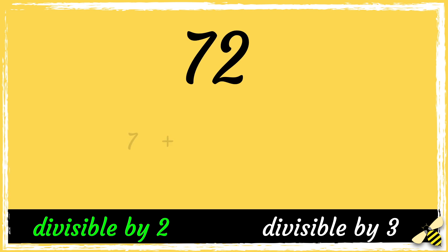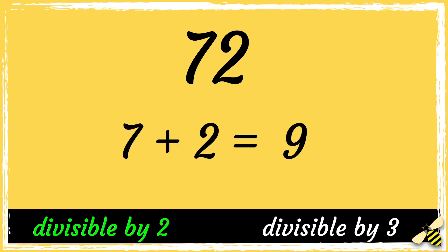So 7 add 2 equals 9. 9 is divisible by 3. So as 72 is divisible by 2 and 3, it is divisible by 6.